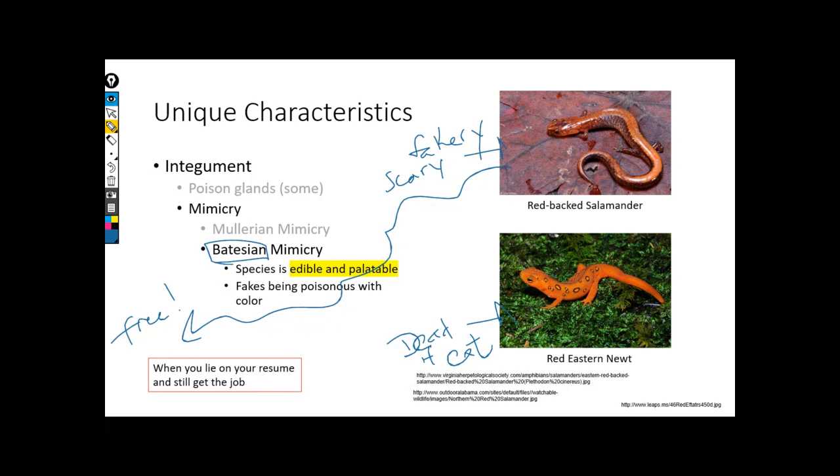So this is similar to Mullerian, except if I was Mullerian, I would actually be deadly. But in Batesian, I'm actually fine. So this is the big difference. If I'm a Mullerian mimicker, I will actually be poisonous. Remember in Mullerian, we were both deadly. Team deadly! In Batesian, I'm just sneaking into the club I don't belong into.